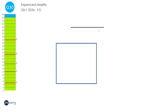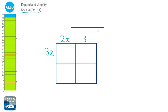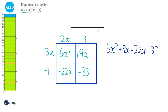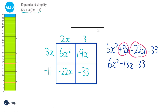I'm going to use a quick multiplication grid. I'll put 2x plus 3 at the top and 3x minus 11 down the side. Multiplying out: 3x times 2x is 6x squared; 3x times 3 is 9x; minus 11 times 2x is minus 22x; minus 11 times 3 is minus 33. Collecting like terms: 6x squared, then 9x minus 22x gives minus 13x, then minus 33. So our answer is 6x squared minus 13x minus 33.